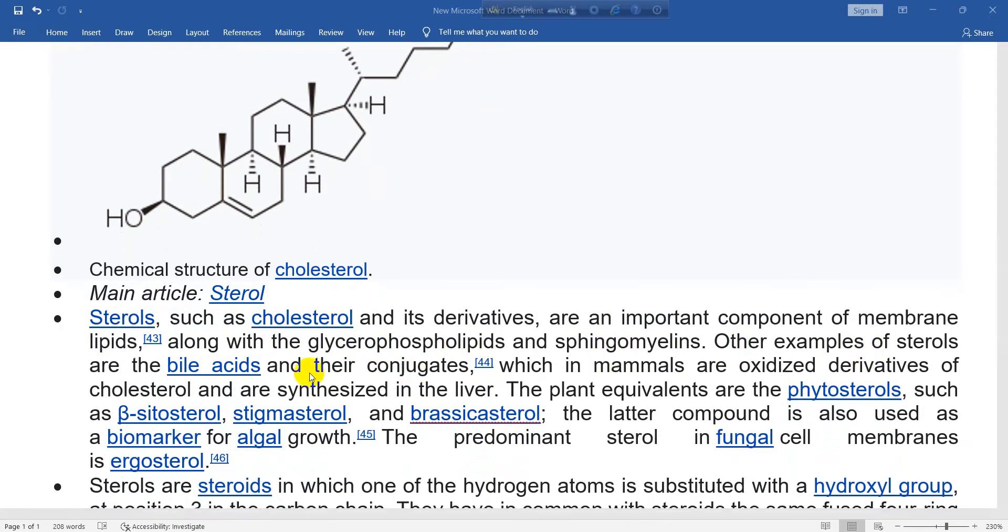Other examples of sterols are the bile acids and their conjugates, which in mammals are oxidized derivatives of cholesterol and are synthesized in the liver. The plant equivalents are the phytosterols, such as beta-sitosterol,